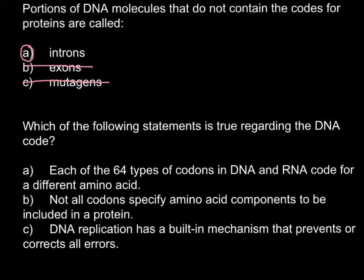So question number two: which of the following statements is true regarding the DNA code? Answer A states that each of the 64 types of codons in DNA and RNA code for a different amino acid. This is not true because we only have 20 amino acids, so 64 types of codons simply cannot code for 64 different amino acids. So this is not the correct answer and we can cross it out.